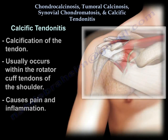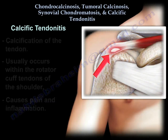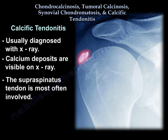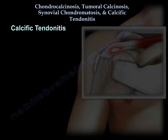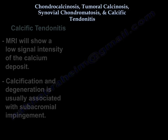Calcific tendinitis means calcification of the tendon, usually occurring in the tendons of the shoulder — specifically the rotator cuff — causing pain and inflammation. It is more common in females and in diabetics. The tendon usually involved is the supraspinatus. It is usually diagnosed by x-ray, which shows calcium deposits visible as a discrete lump, usually about one to one-and-a-half centimeters from the supraspinatus tendon insertion. MRI will show low signal intensity of the calcium deposits. The calcification and degeneration of the tendon is usually associated with subacromial impingement.